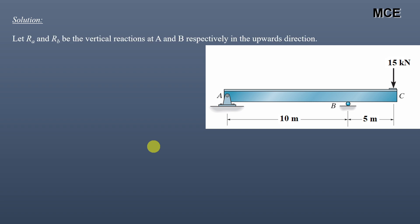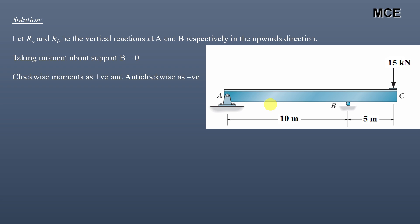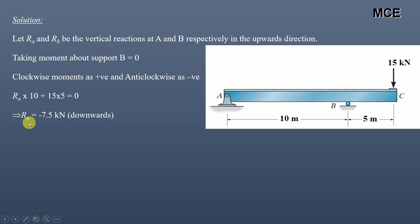First, we will find the vertical reactions of this beam, assuming Ra and Rb are the vertical reactions at points A and B respectively in the upward direction. Taking moments about support B equal to zero, assuming clockwise moments are positive and anticlockwise moments are negative: Ra's moment about B is clockwise with value Ra into 10, and the moment of the 15 kN load about B is also clockwise with magnitude 15 into 5. So Ra equals minus 7.5 kN.